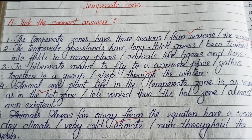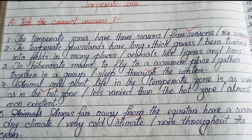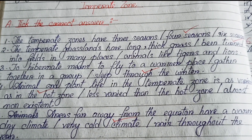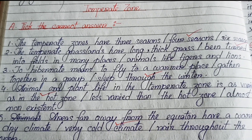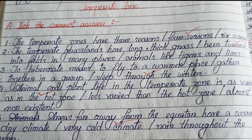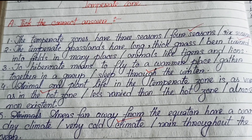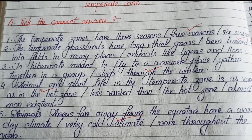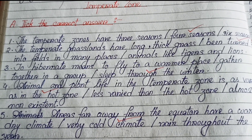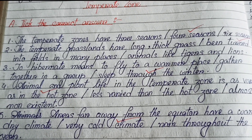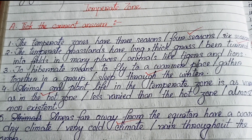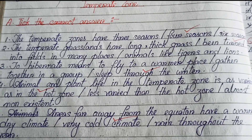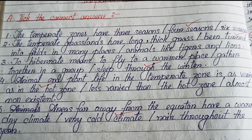Question A: Tick the correct answer. Number one: the temperate zones have three seasons, four seasons, or six seasons. The answer is four seasons. Number two: the temperate grasslands have long thick grass been turned into fields in many places, or animals like tigers and lions. The answer is been turned into fields in many places.